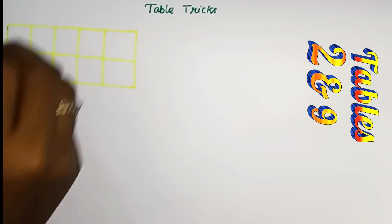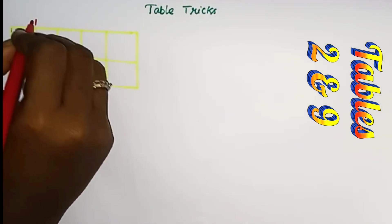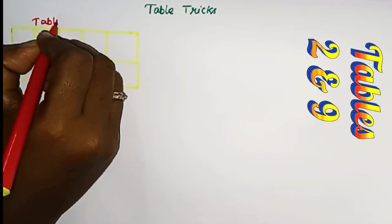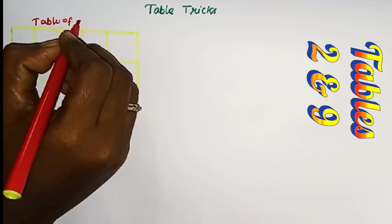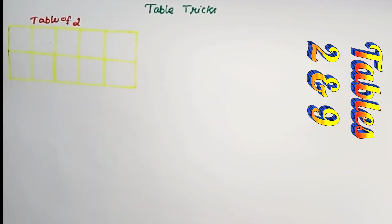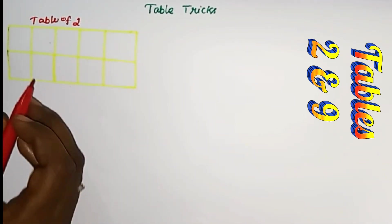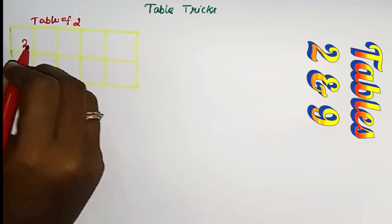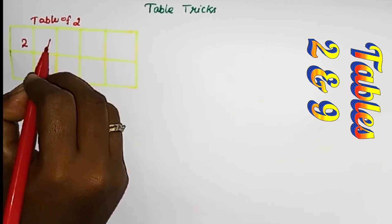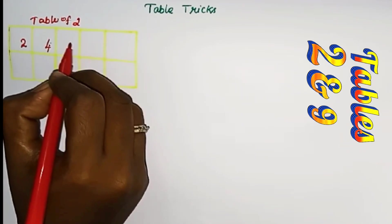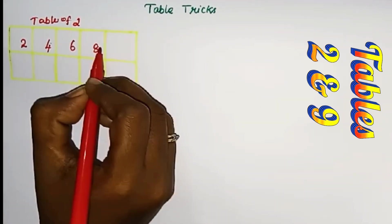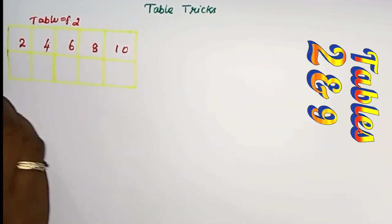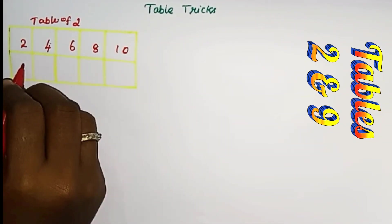Tablets check. Table of 2. Let's write 5 even numbers. Even numbers are 2, 4, 6, 8, 10. Again write that.